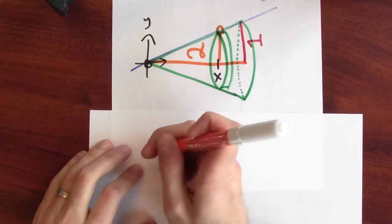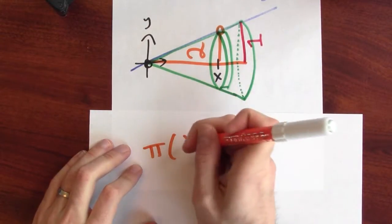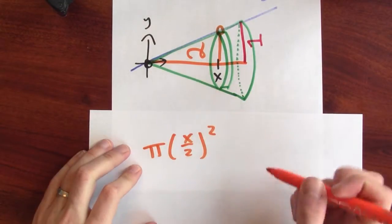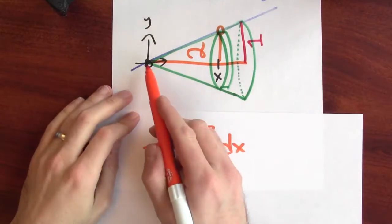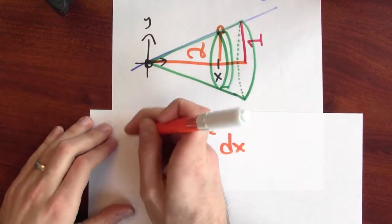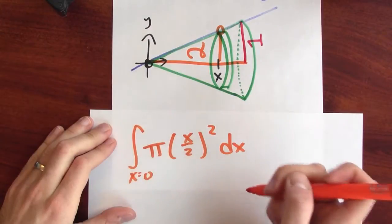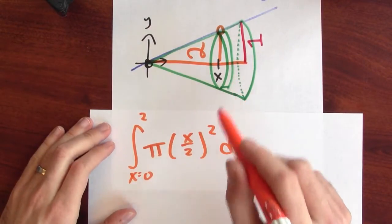I can write down the volume of that disk. The volume's pi times the radius, which is x over 2 squared, times the thickness of that disk, which is dx. And now I'm integrating this from where to where. Well, x goes from 0 all the way down to 2. So this will be the integral from x equals 0 to 2. And this integral will calculate the volume of my cone.